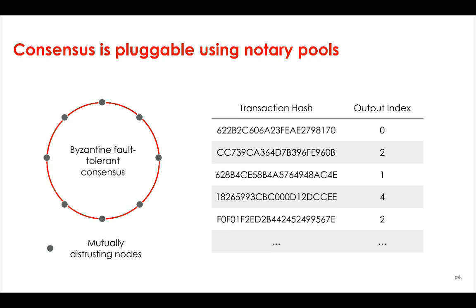Now, one obvious question is: if data is only distributed on the network on a need-to-know basis, how do we prevent double spends? How do we prevent some node transferring some digital asset to one party, and then turning around and also transferring it to another party? In Corda, we prevent double spends using notary pools.